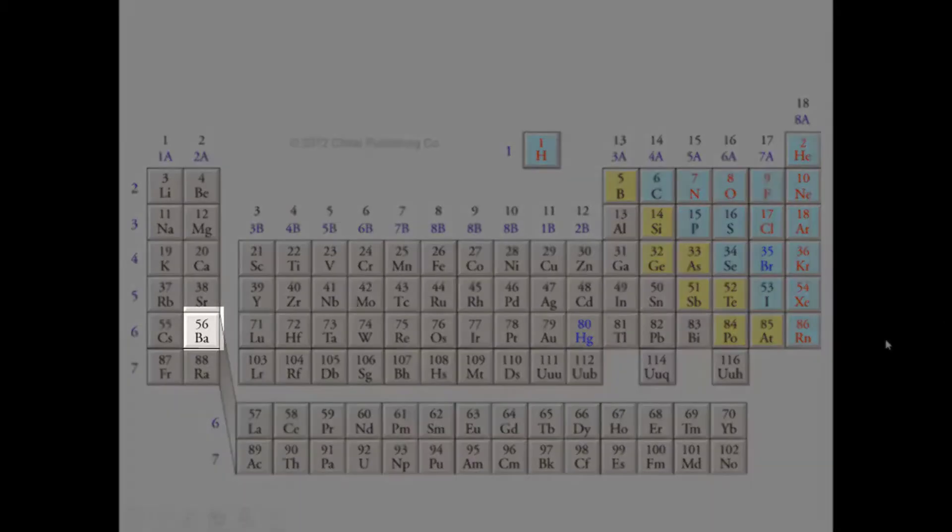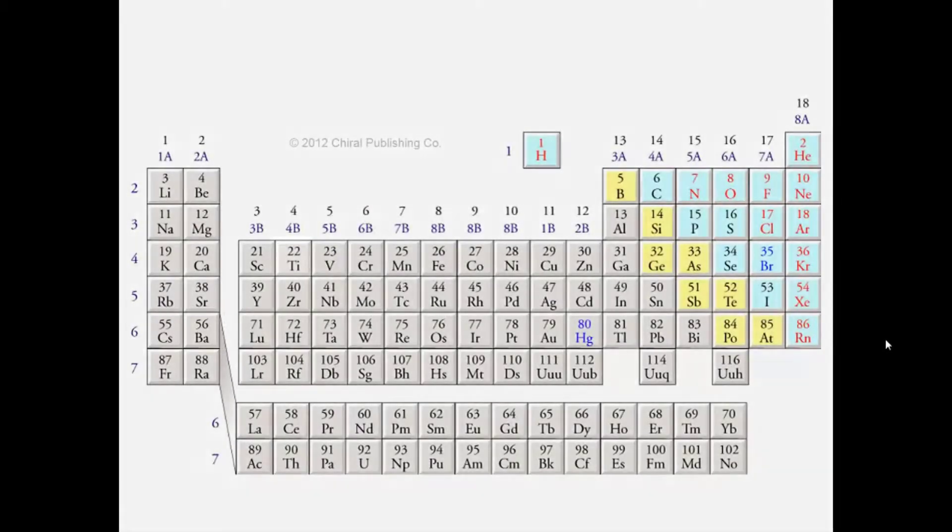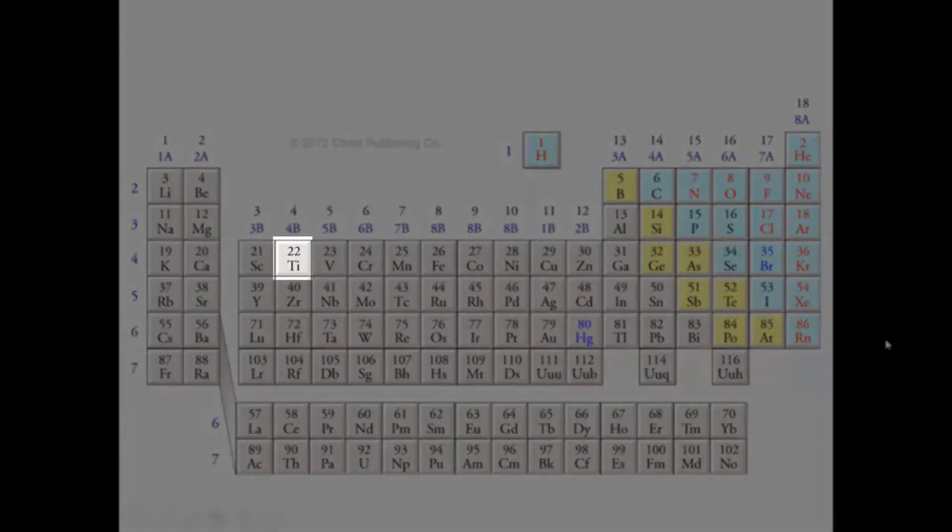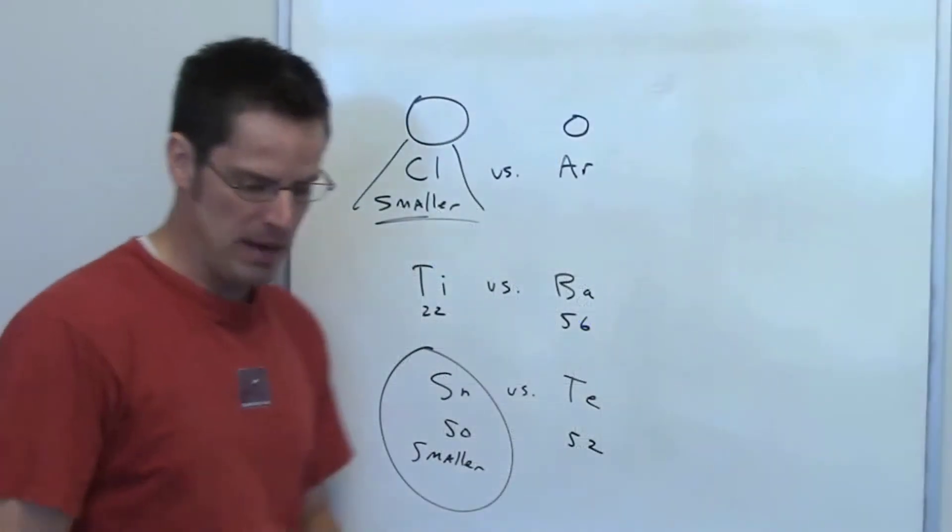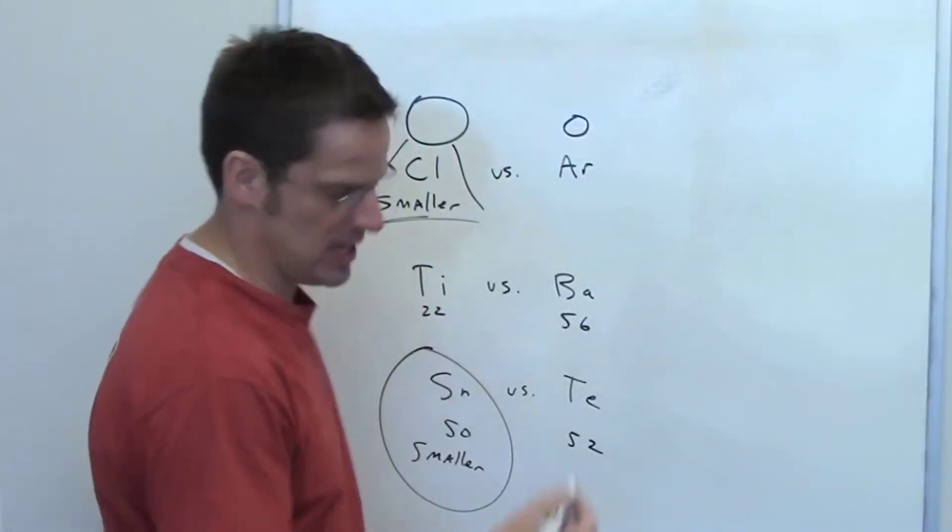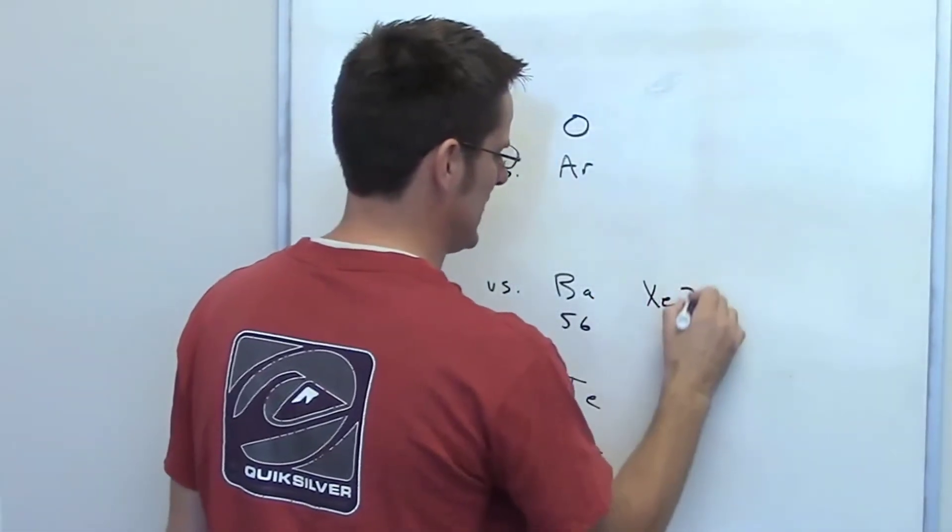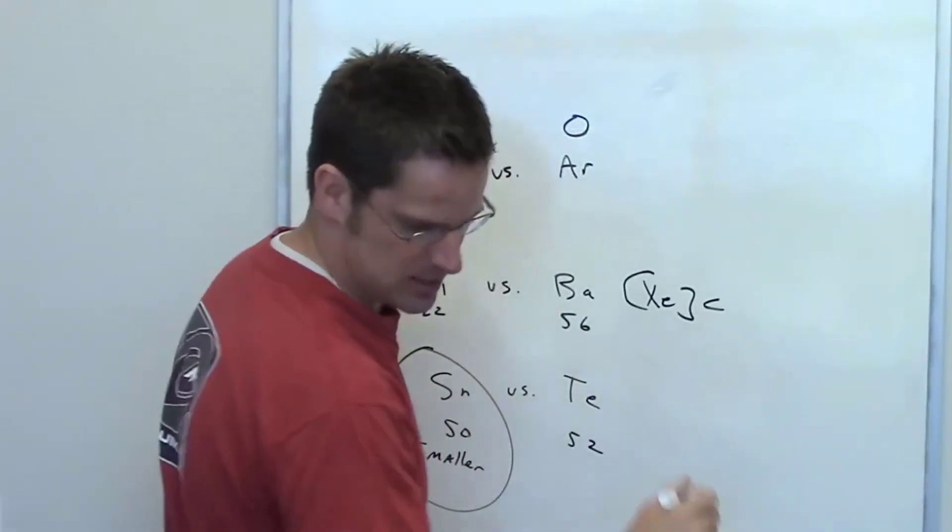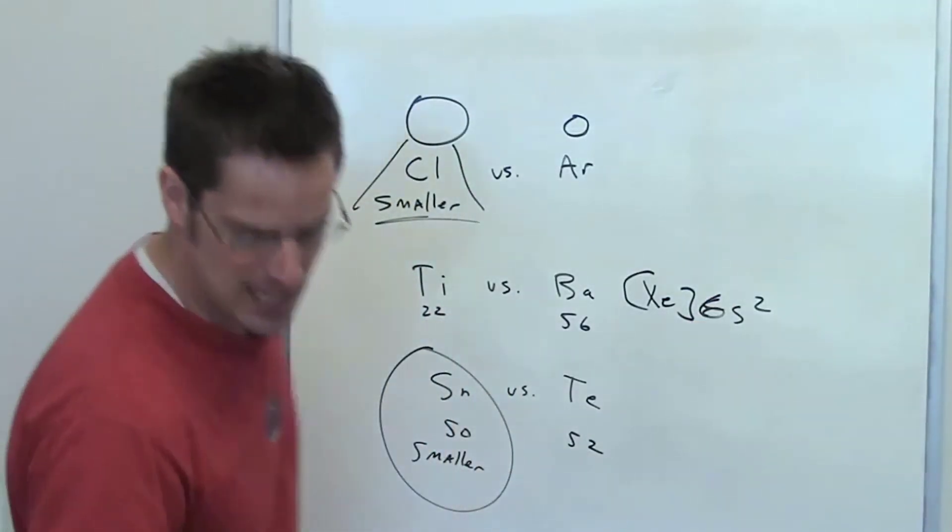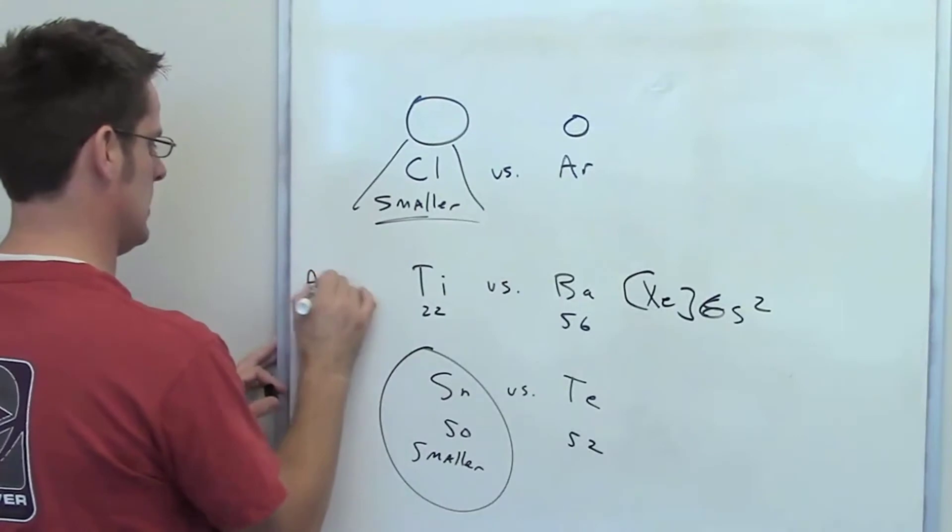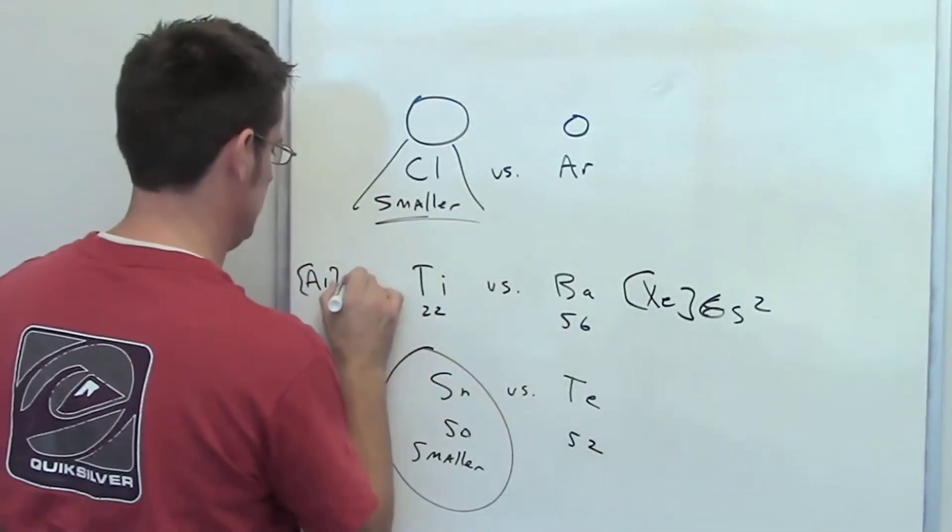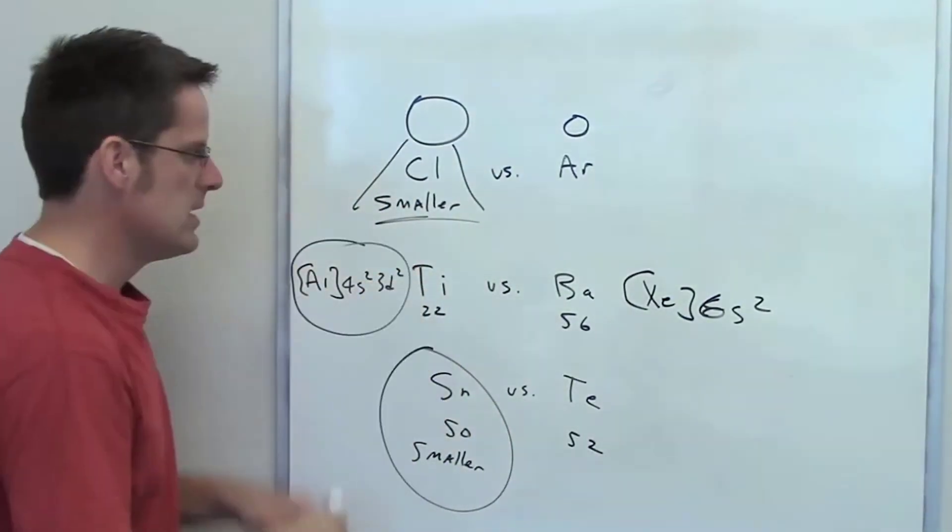However, barium is, I think, one, two - it's two rows further down than titanium. If you look at barium's electron configuration, for example, it has an electron configuration of xenon 6s2, whereas titanium is argon 4s2 3d2. Here's the point.